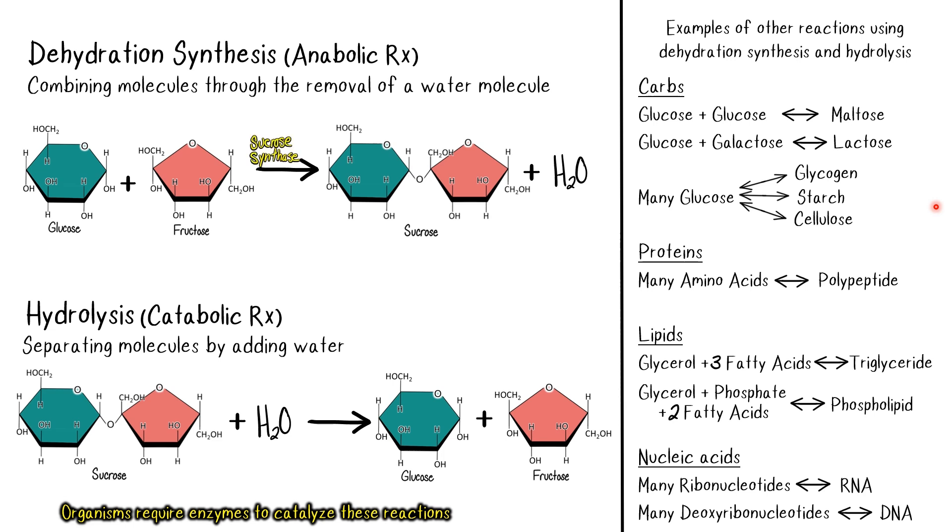So plants have the enzyme sucrose synthase to make sucrose, and humans have the enzyme sucrase, which breaks sucrose back down into glucose and fructose. And every other biomolecule has associated enzymes as well. So if an organism does not have the enzyme, it is either not going to be able to do the reaction at all, or it is going to be in such a tiny amount, it won't really matter.